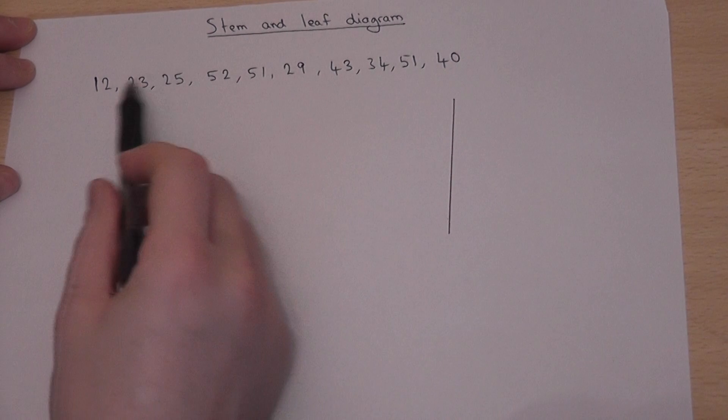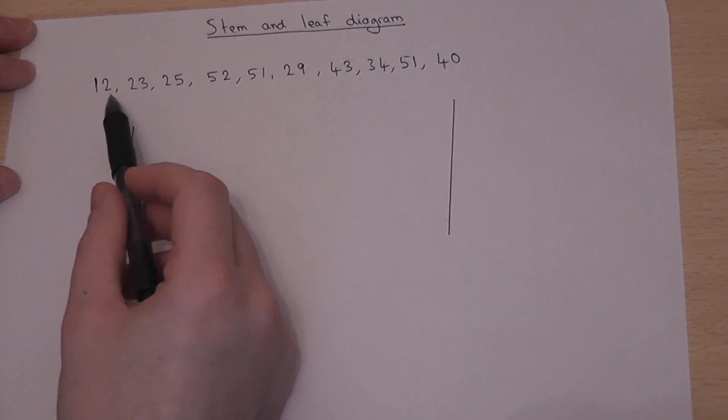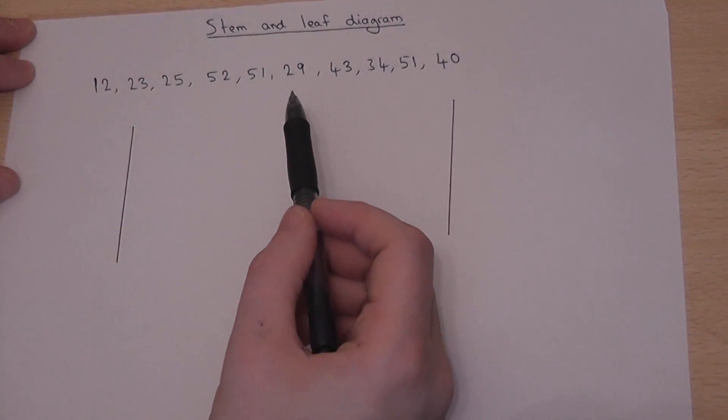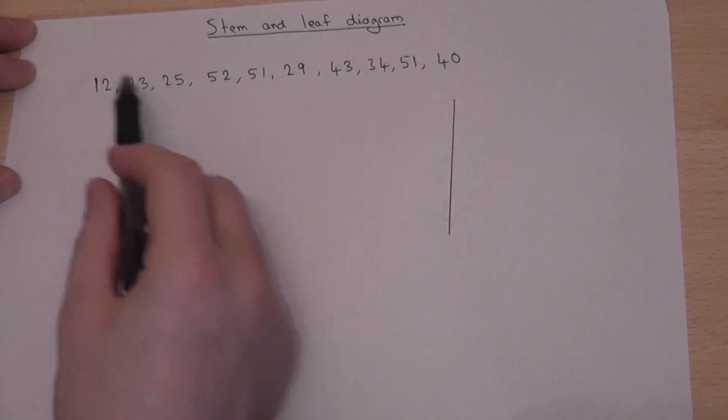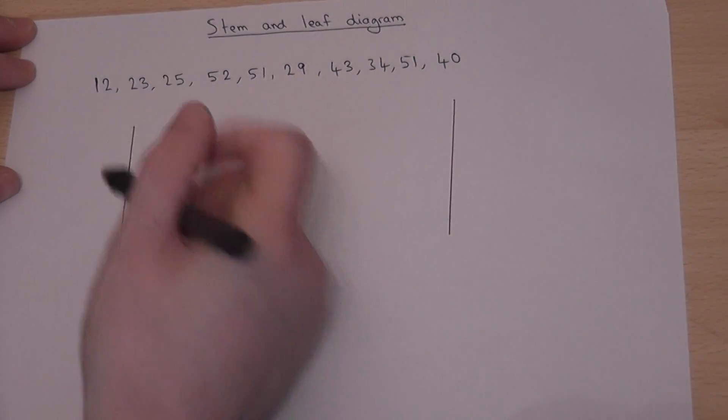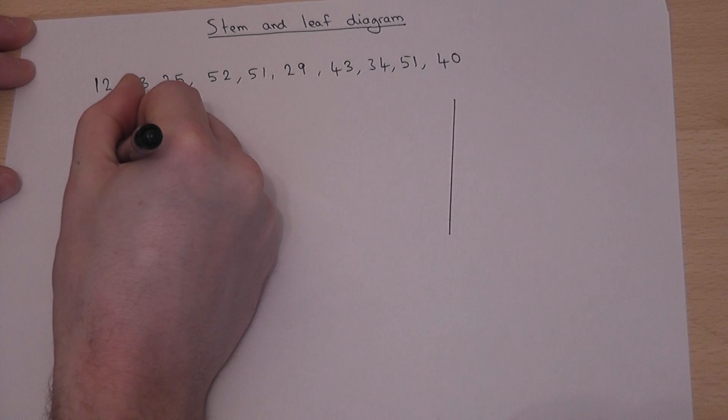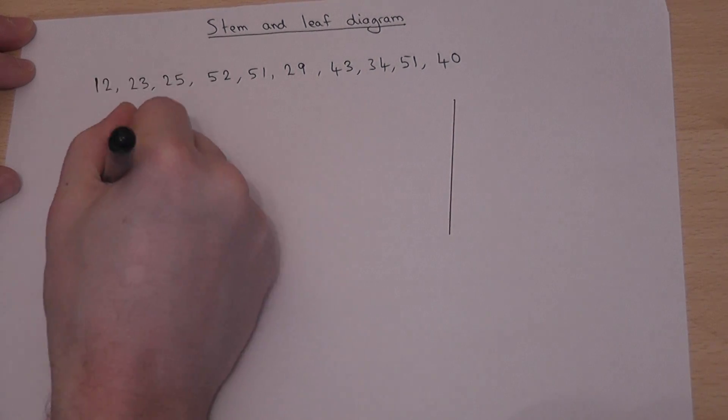Now, what we do is we've got lots of numbers here which are tens, e.g. 12, 25, 52. And I put the tens down the side, so we've got 10, 20, 30, 40 and 50.